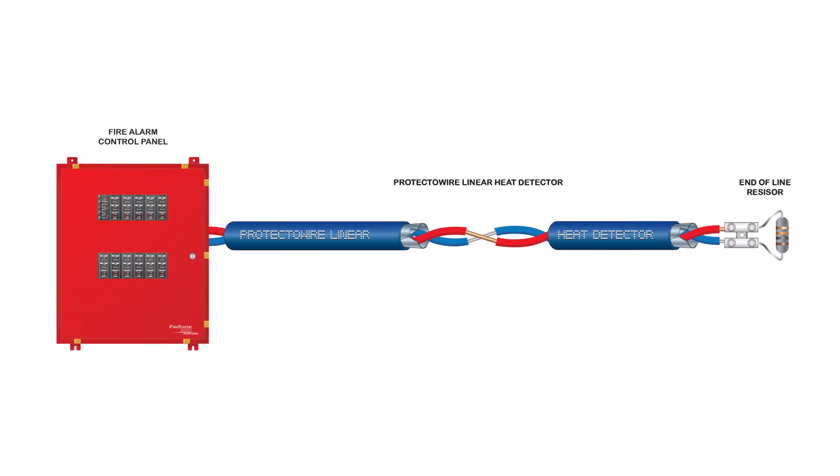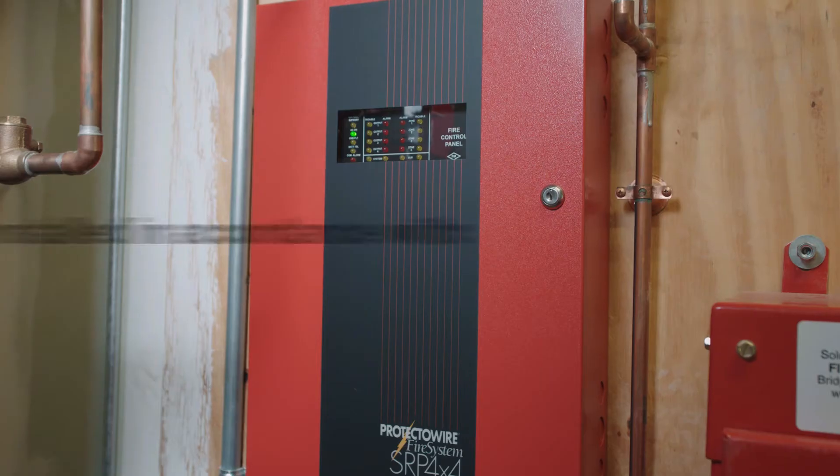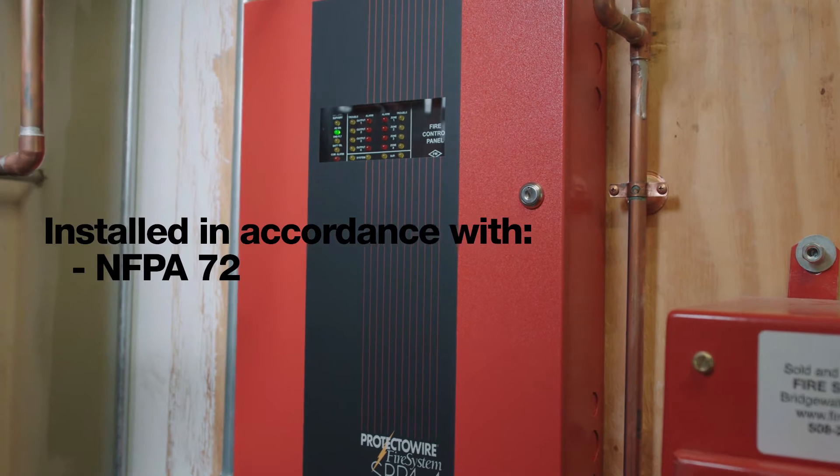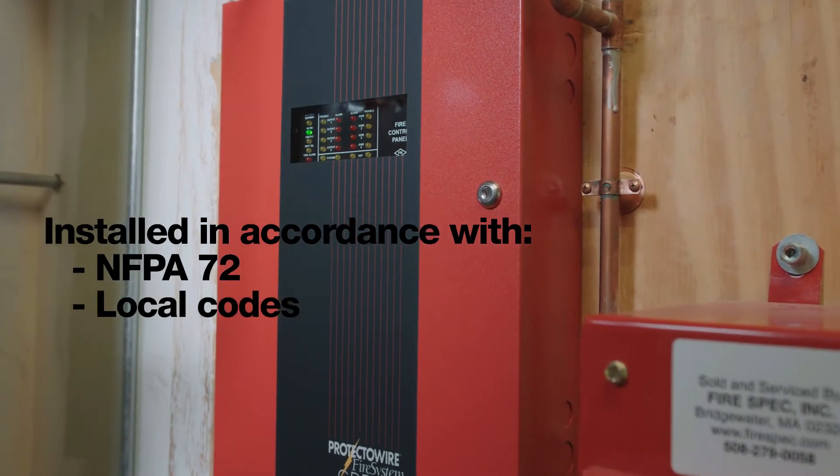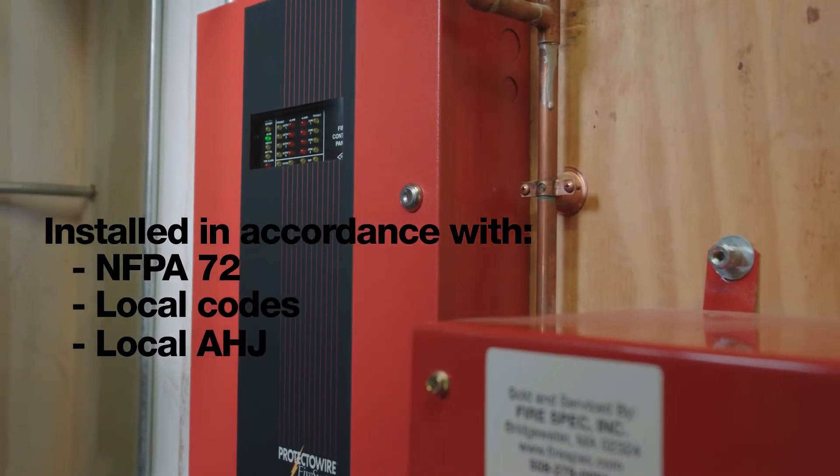The Protectowire linear heat detector must be installed in accordance with applicable sections of NFPA 72, local codes, or as required by the local AHJ.